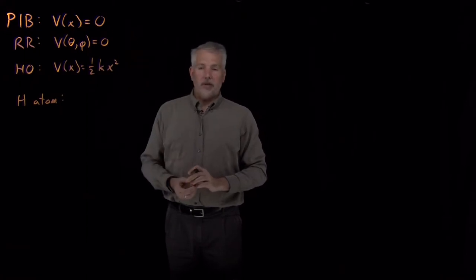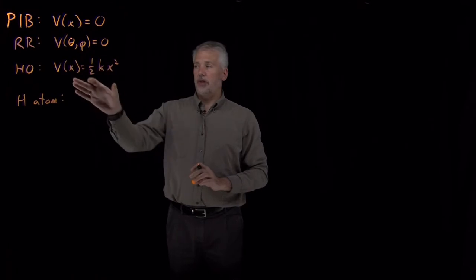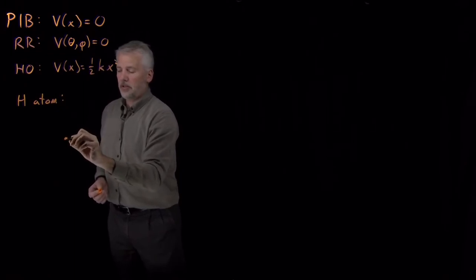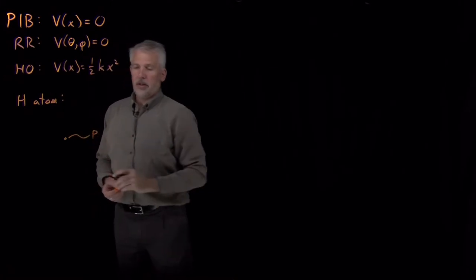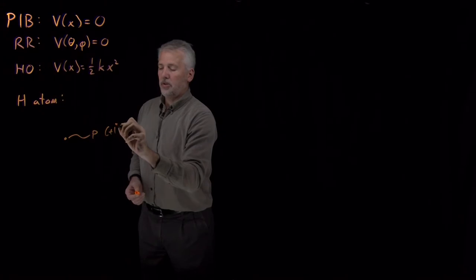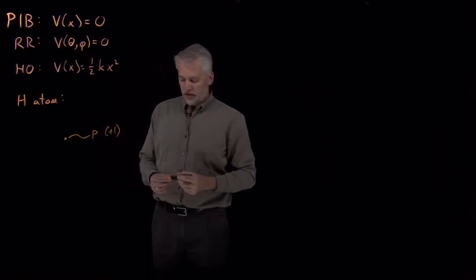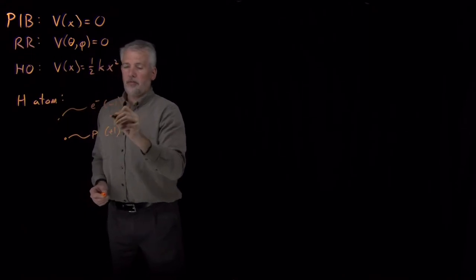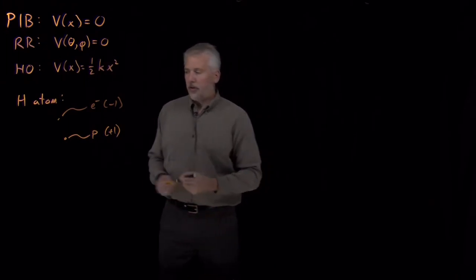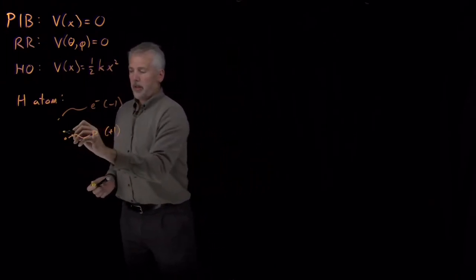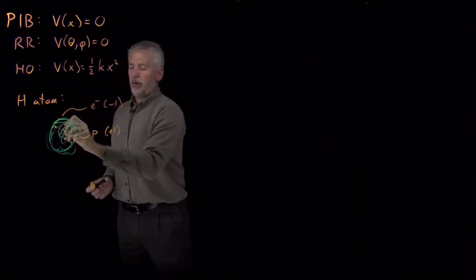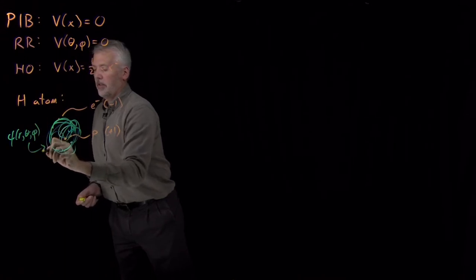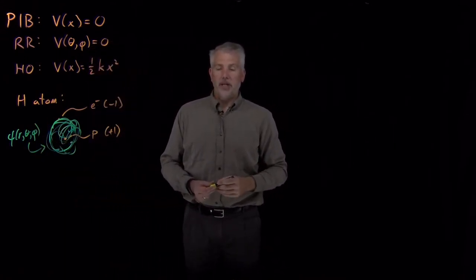Just like for a particle in a box, rigid rotor, and harmonic oscillator, what we need to do first is figure out what the potential energy is that the system obeys. The hydrogen atom consists of one proton in the nucleus, which has a charge of plus one electron, and also an electron in the hydrogen atom, which has a charge of minus one in units of electrons. Quantum mechanically, we think of the nucleus as a point at the center of the atom, surrounded by the electron in some sense. Solving for the wave function will tell us the probability of finding the electron at various different locations around the nucleus.